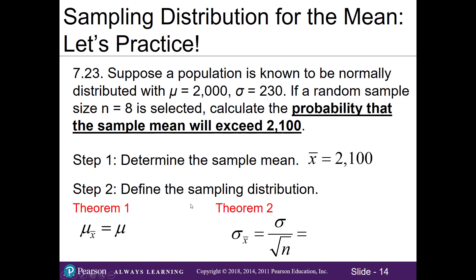In step two, we want to define the sampling distribution. We want to make use of our theorem 1 and theorem 2 and make sure we pull out the pieces we need for our formula. Our population mean, or our μ, is the 2,000 from the story. And for our standard error, that's where we'll take the population standard deviation of 230 and divide it by our square root of 8, because our sample size was 8. Once I take this into my calculator, 230 divided by the square root of 8, we get a standard error of 81.32.